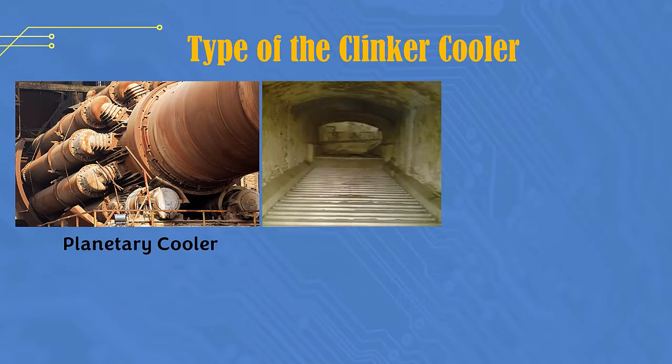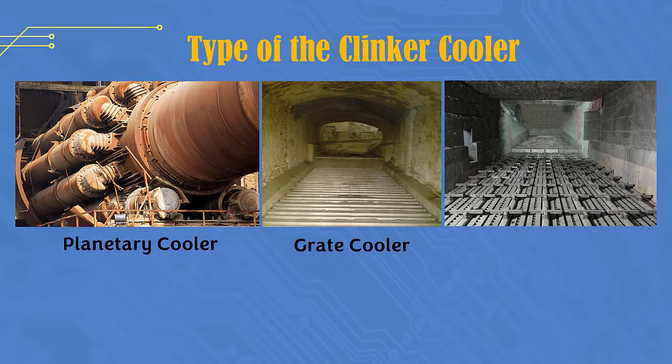Alright, let's continue. The types of clinker coolers and their working principles include: 1. Satellite cooler or planetary cooler, 2. Grate coolers, 3. Crossbar cooler.